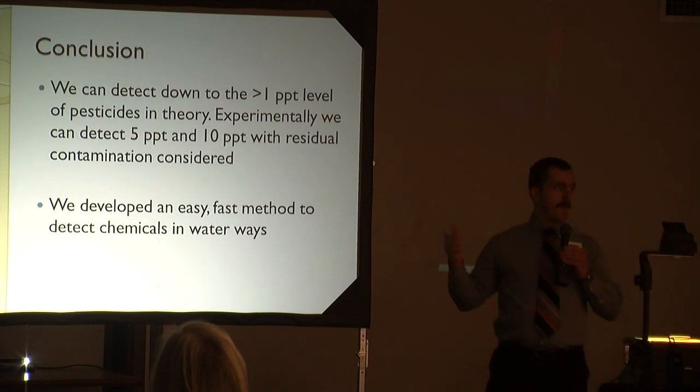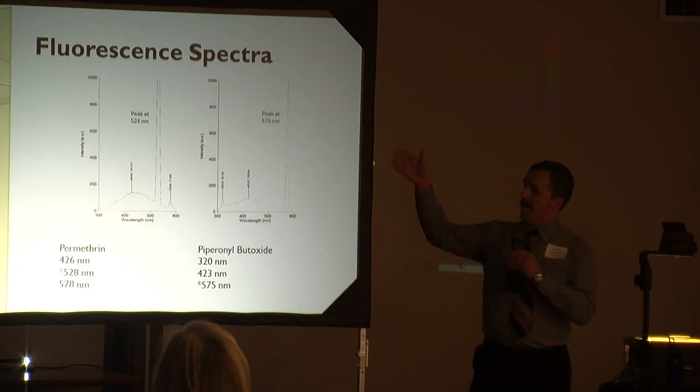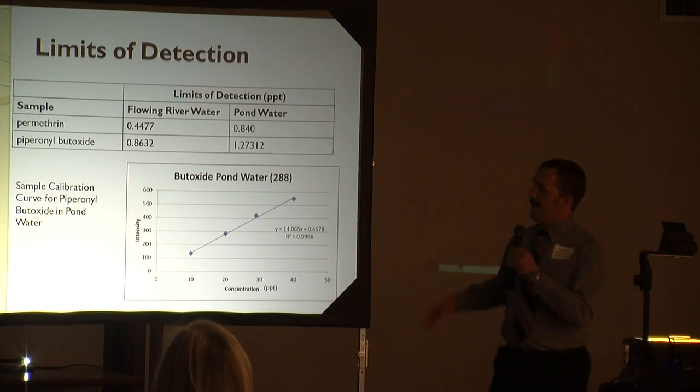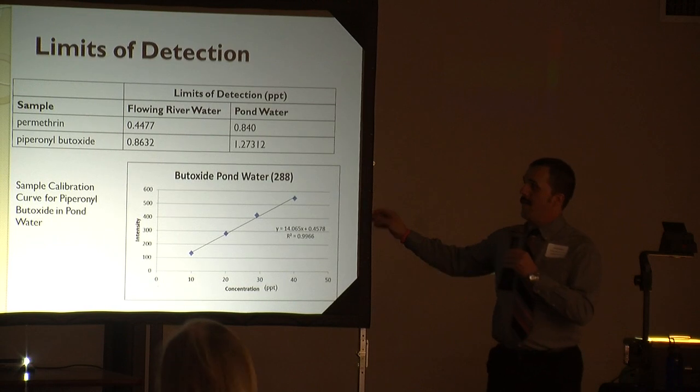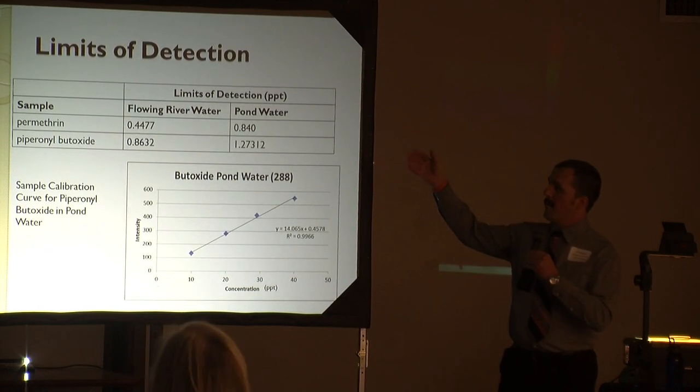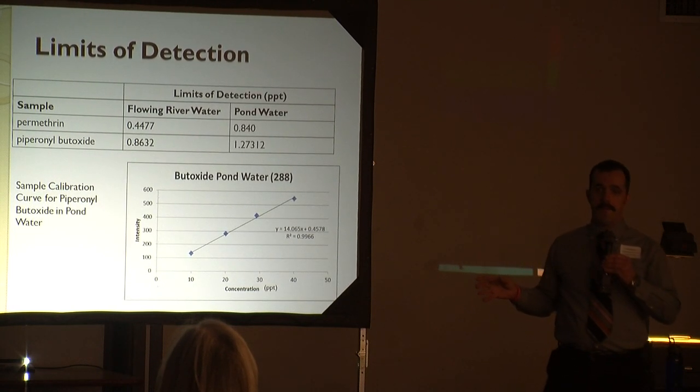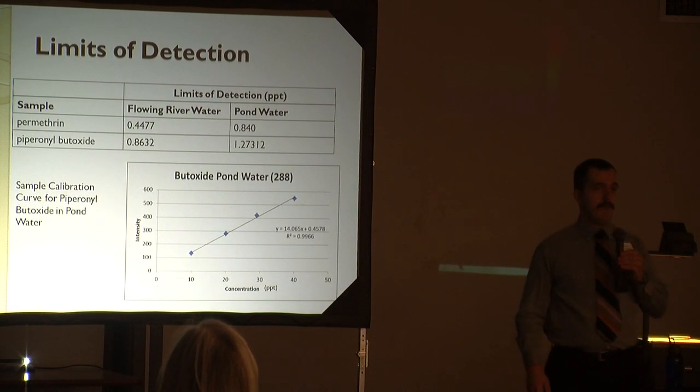So we were able to determine the limits of detection. Right here, all in parts per trillion, for the Rio Grande flowing water and for that pond water. These are theoretical limits of detection, but due to residual contamination...